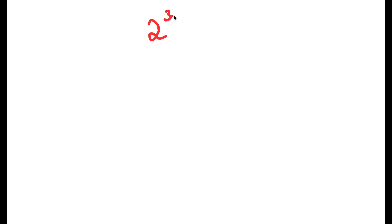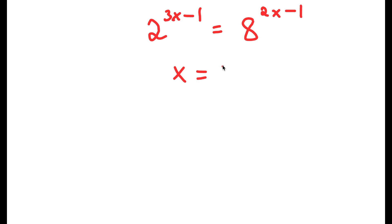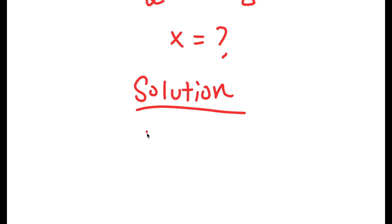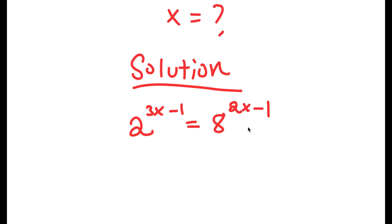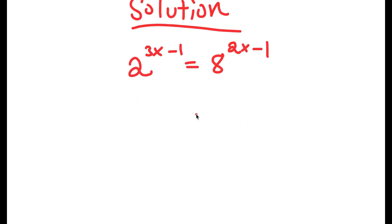In this problem, I have 2 to the power of 3x minus 1 is equal to 8 to the power of 2x minus 1. I want to find the value of x. For my solution, I'm going to start by rewriting my equation. I'll rewrite 8 as 2 to the power of 3, because 8 is equal to 2 to the power of 3.